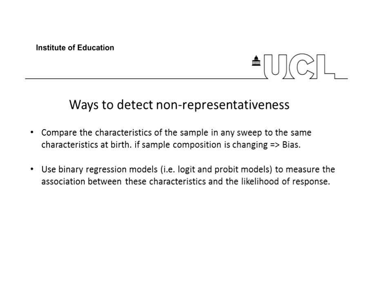To detect attrition in a longitudinal survey, you can do two parts of analysis. First, compare the characteristics of your sample in any sweep to the same characteristics at birth — because the sample at birth was almost complete — to see how these characteristics evolve and whether the percentage of men, disadvantaged groups, or other variables is declining. You can also use binary regression models like logit or probit models where the outcome variable — the dependent variable — is response to the survey, taking the value of one if the respondent participated and zero otherwise, with independent variables being any characteristics of the respondent. If these characteristics are highly correlated with the likelihood of responding, you can conclude that attrition is leading to sample bias.